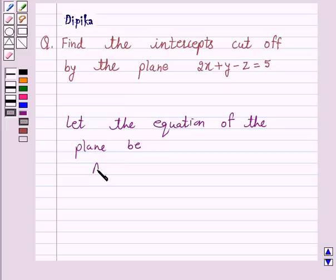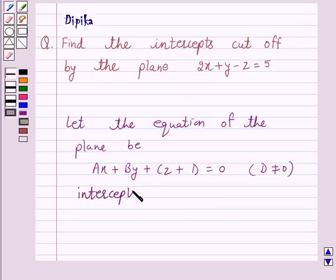Ax plus By plus Cz plus D is equal to 0 where D is not equal to 0. So, let the plane intercepts a, b, c on x, y and z axis respectively.